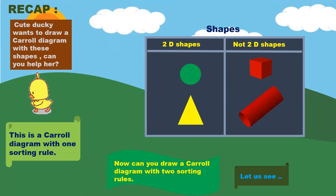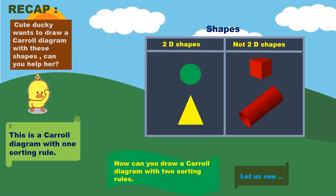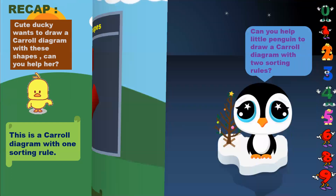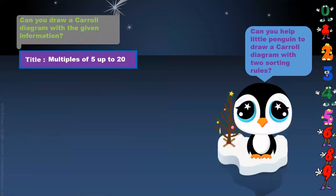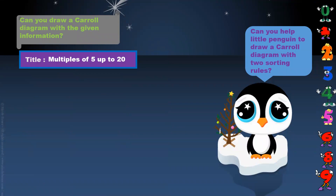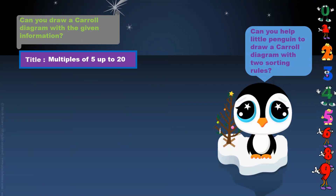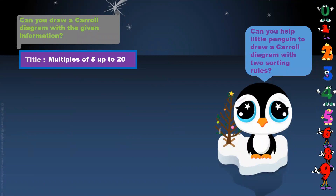Now can you draw a cattle diagram with two sorting rules? Can you draw a cattle diagram with the given information? Title: multiples of 5 up to 20.